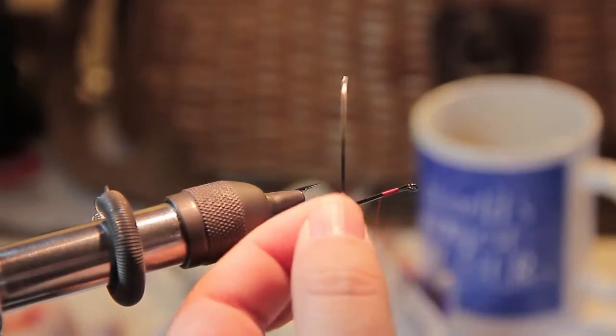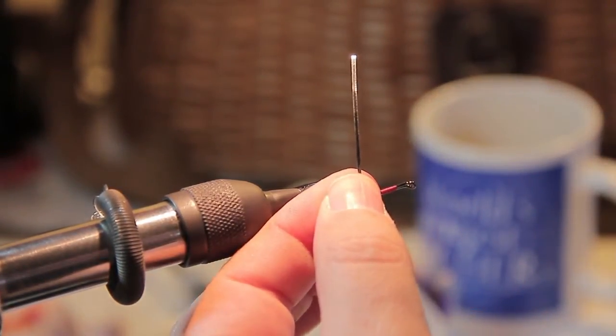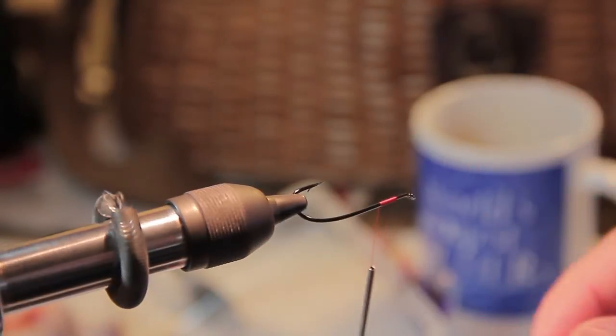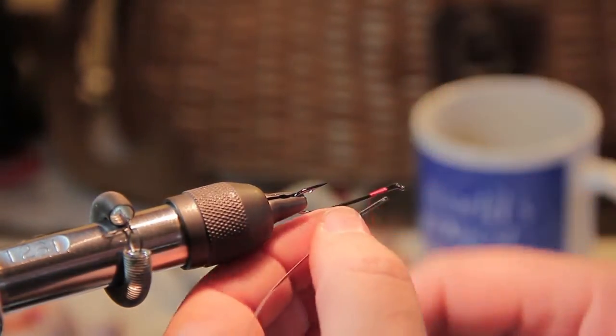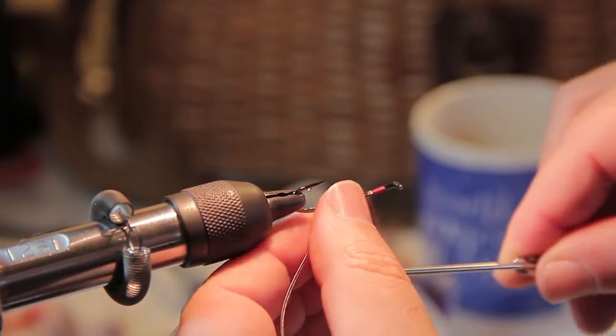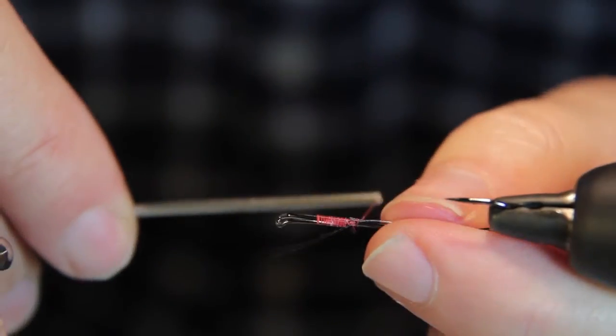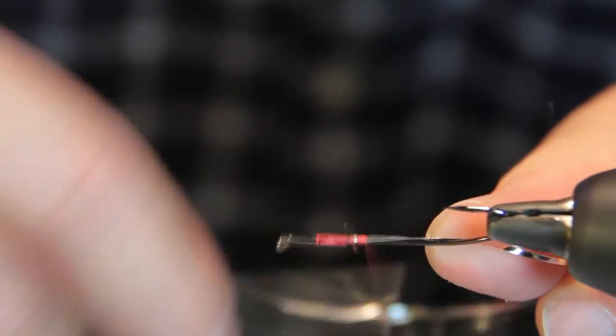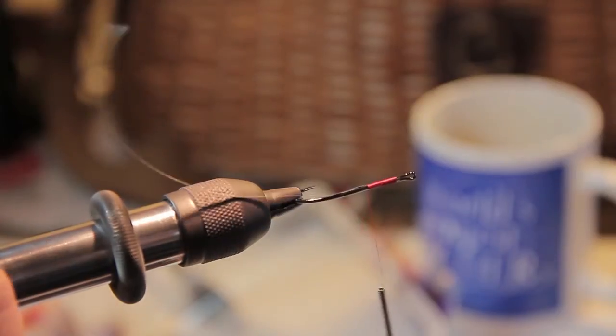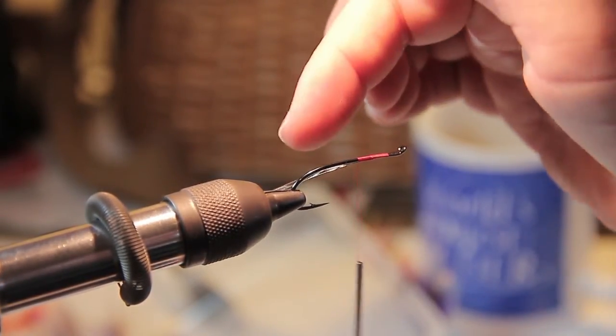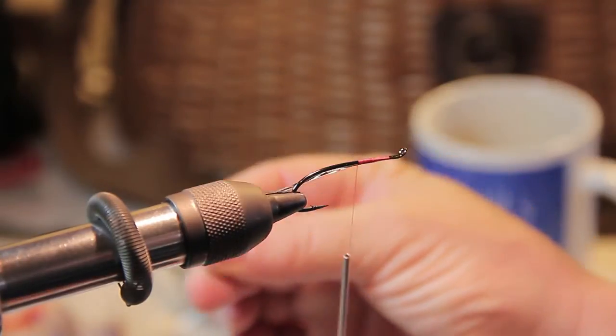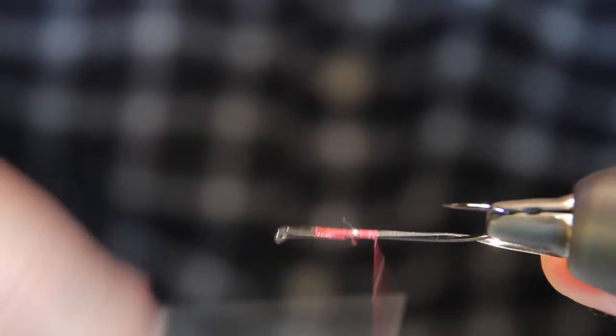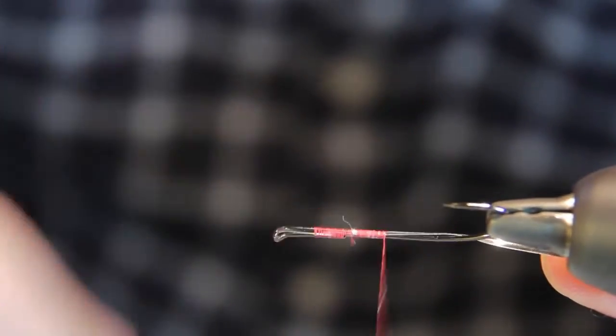So what I have here for my ribbing is a strand of flat metallic French tinsel medium. I tie it in first on the bottom on the far side. So when this fly is rotated around, the material is starting back here and then it's going to come up forward and around. Rotate your vise around if you can or learn to tie materials on the bottom.